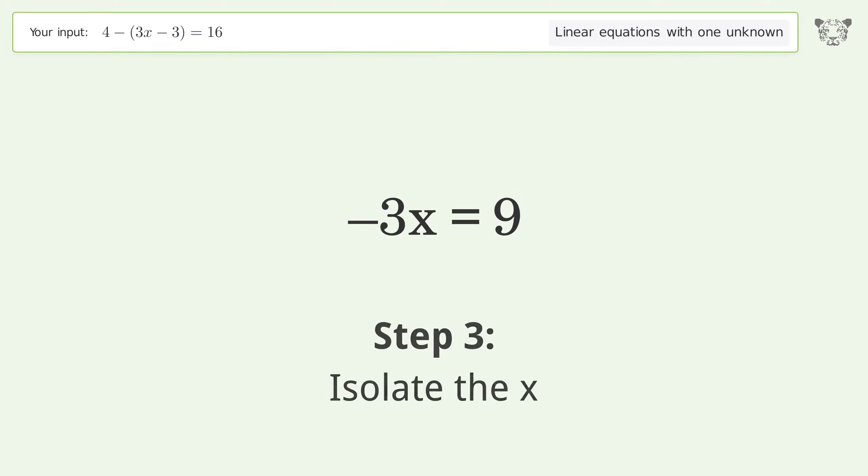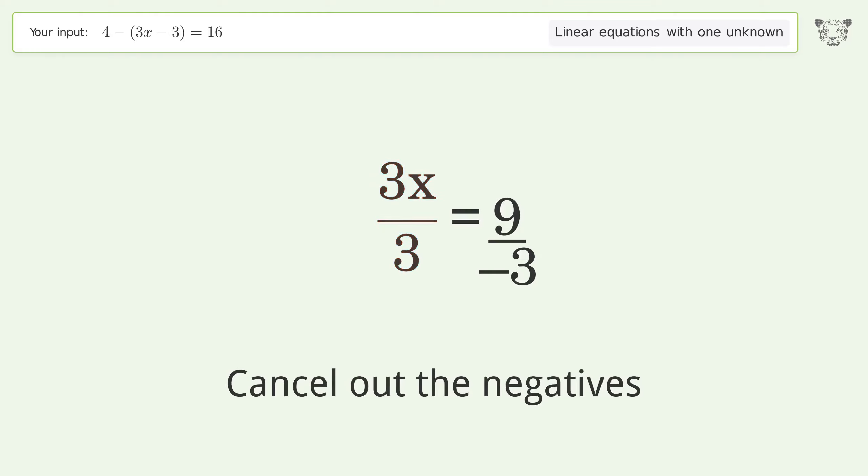Isolate the x. Divide both sides by negative 3, cancel out the negatives, and simplify the fraction.